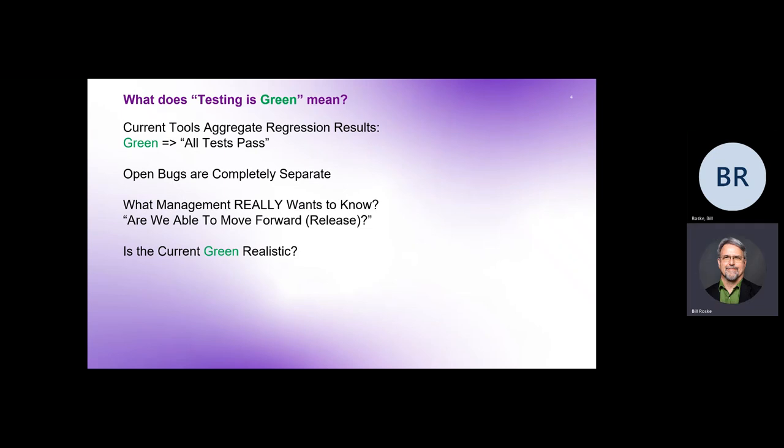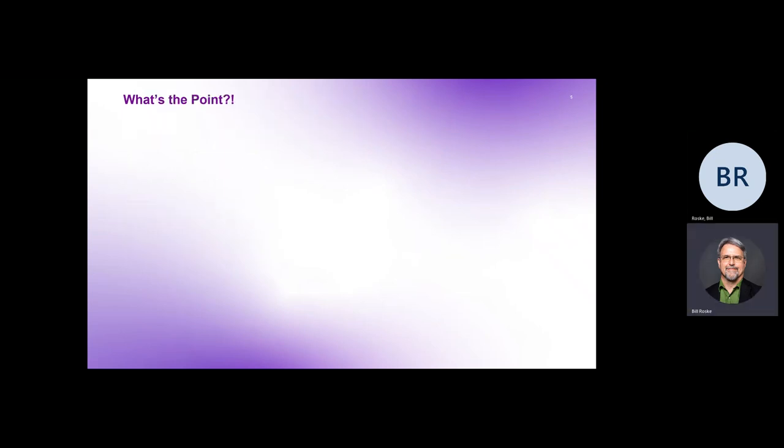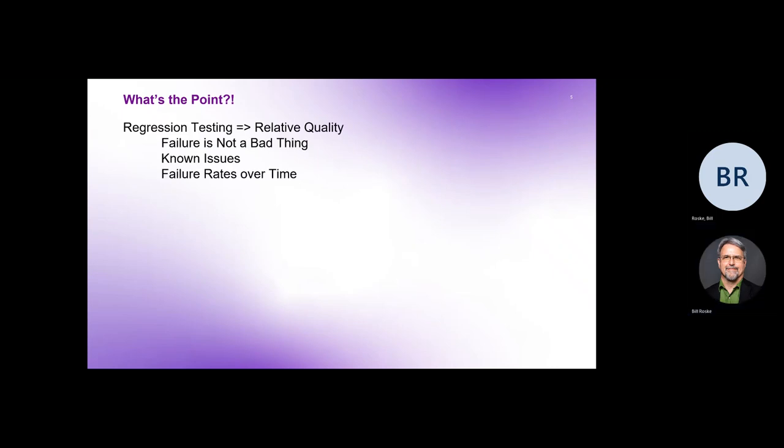So, I had a mentor early in my career when I was trying to put together a metrics program, and she had years of experience in quality, both in manufacturing and had moved to the software industry. And she pointed out that whether it's manufacturing or software, you have to be careful how you define your metrics, because people will take the path of least resistance in order to make that metric look good. So, if the path of least resistance is something you don't want them to do, redefine your metric. So, what's the point, right?